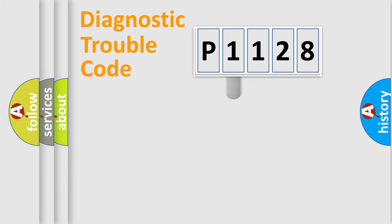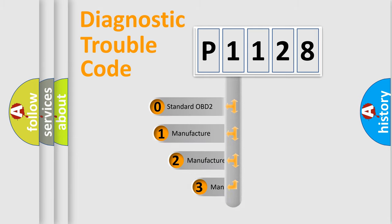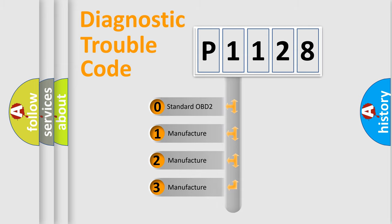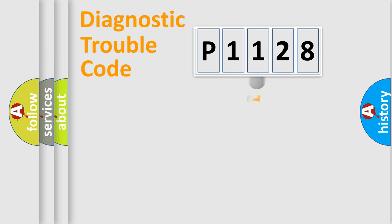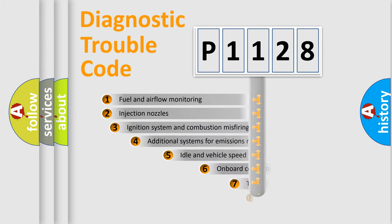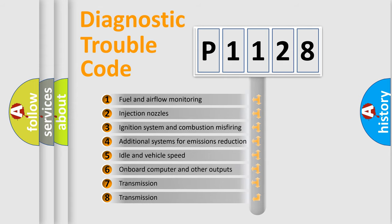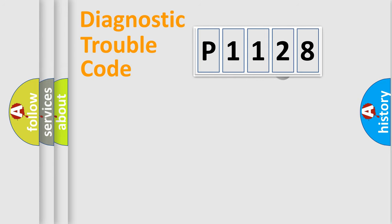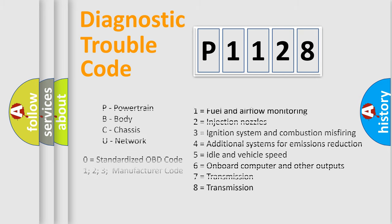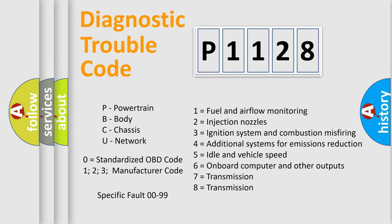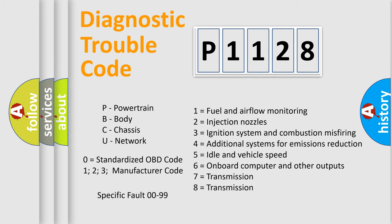This distribution is defined in the first character of the code. If the second character is expressed as zero, it is a standardized error. In the case of numbers 1, 2, or 3, it is a manufacturer-specific error. The third character specifies a subset of errors. Only the last two characters define the specific fault of the group, and this division is valid only when the second character is zero.